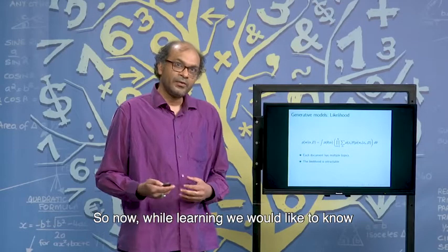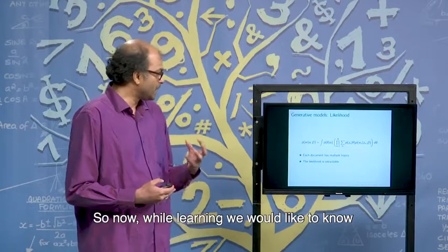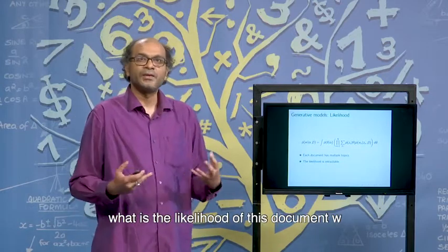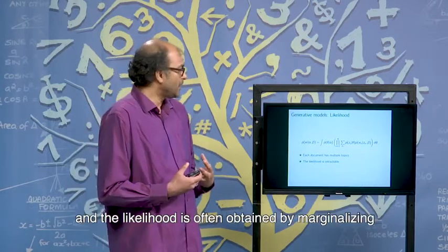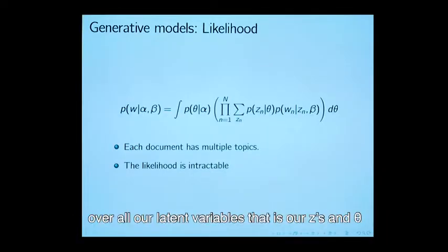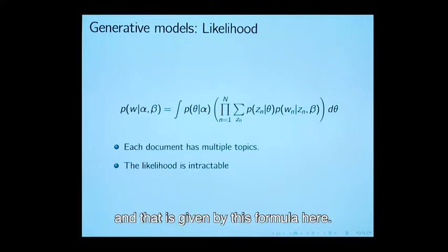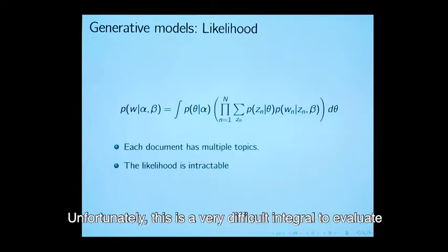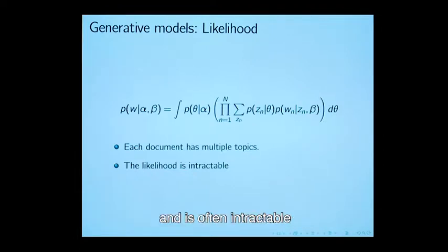While learning, we would like to know what is the likelihood of this word or this document w. The likelihood is often obtained by marginalizing over all the latent variables, that is our z's and theta. That is given by this formula here. Unfortunately, this is a very difficult integral to evaluate and is often intractable. In fact, it is NP-hard.